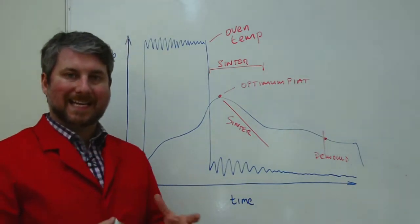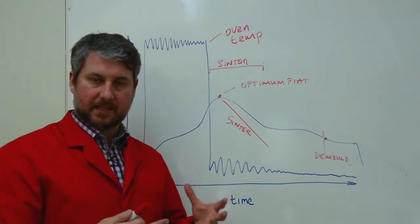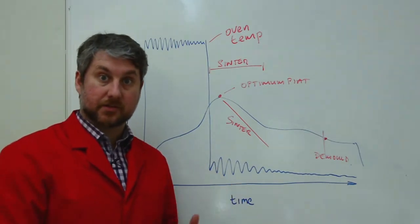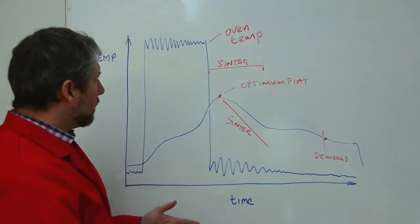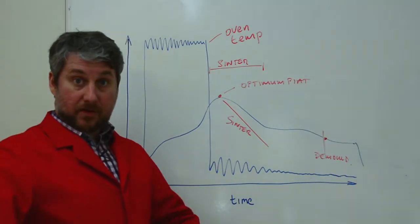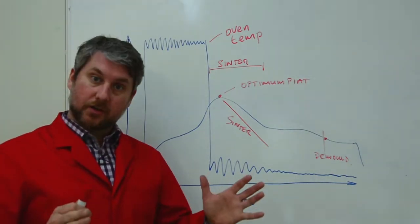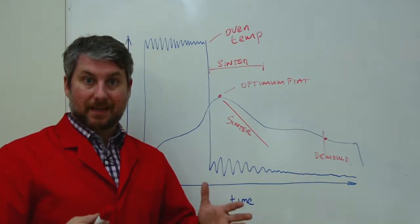So what are the kind of techniques that we would use in a customer's plant to reduce their cycle times? Well, the obvious one is oven temperature. If you increase your oven temperature, you're going to reduce your cycle time.